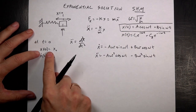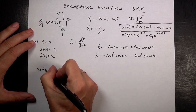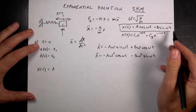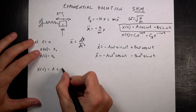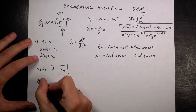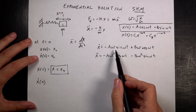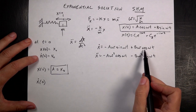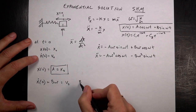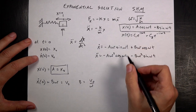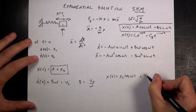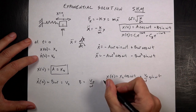Now applying initial conditions. At t = 0, x(0) equals A·cos(0) + B·sin(0) = A, since cos(0)=1 and sin(0)=0. So A equals x0. For the velocity initial condition, x-dot(0): the sine term vanishes, cosine of 0 is 1, so we get B·ω equals v0, meaning B equals v0 over ω. So the solution is x(t) = x0·cos(ωt) + (v0/ω)·sin(ωt).